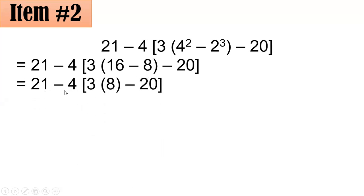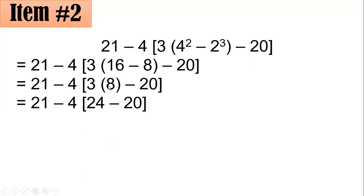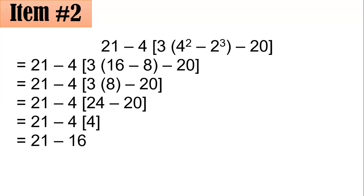We simplify 16 minus 8 as 8, giving us 21 minus 4 times the quantity 3 times 8 minus 20. By GEMDAS, multiplication comes before subtraction, so 3 times 8 is 24. Then 24 minus 20 is 4, giving 21 minus 4 times 4. Multiplication first: 4 times 4 is 16. Then 21 minus 16 equals 5. The correct answer is letter C.